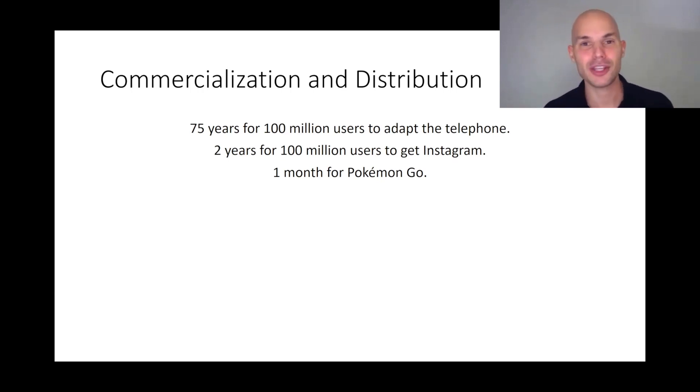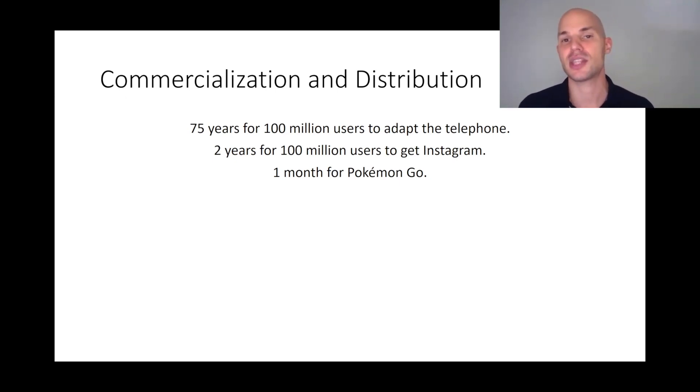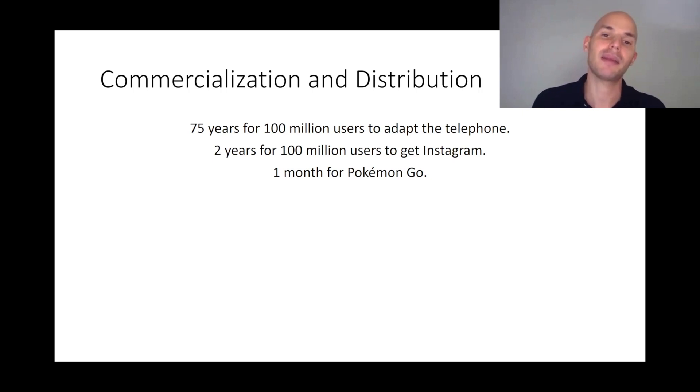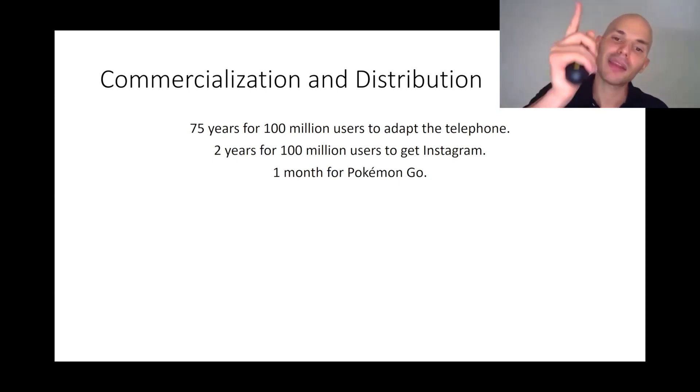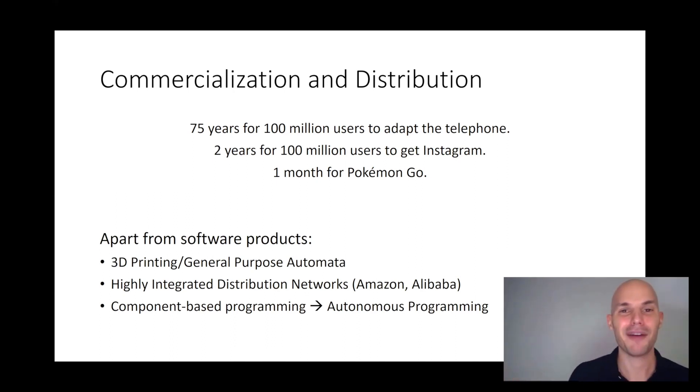To discuss the implications of automation and autonomization today, a great example is commercialization and distribution. It took 75 years for 100 million users to adopt the telephone, while it took only two years for 100 million users to get Instagram, and only one month for Pokémon Go. Commercialization and distribution are accelerating. You might think these are just software products — yes, but we made the necessary technology to enable this, and we should be proud. Moving beyond software, with physical objects we have more and more 3D printing and general-purpose automata that can build physical objects just by changing the blueprint.